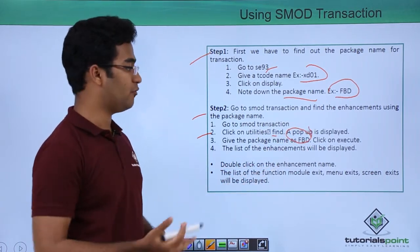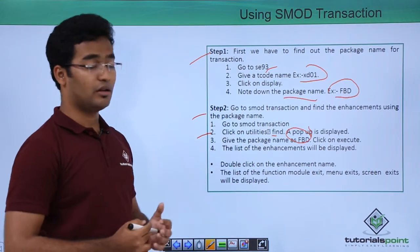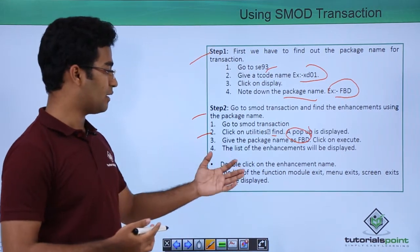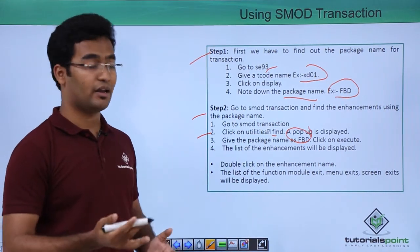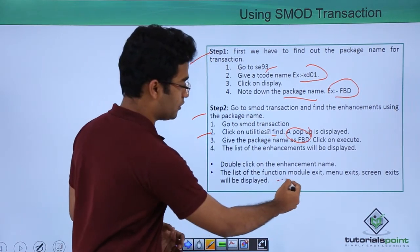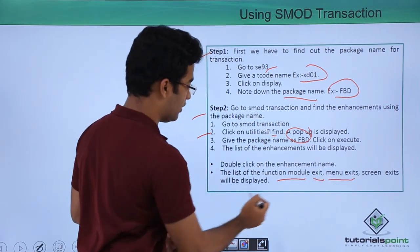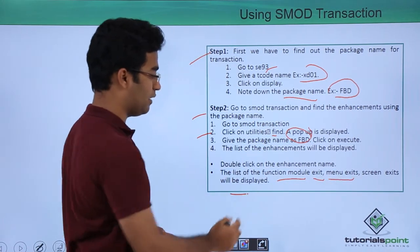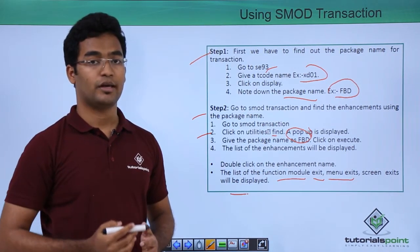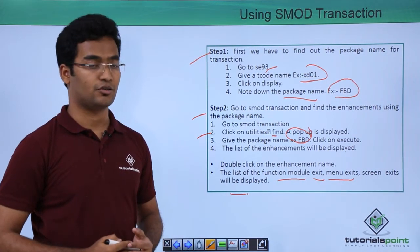A list of enhancements would be displayed. Based on this list, we double-click on our enhancement name, and we will be shown function module exits, menu exits, screen exits, and other exits also. This was the second method using the SMOD transaction code.